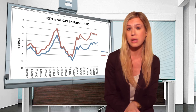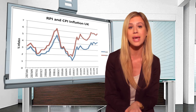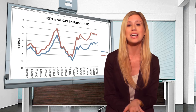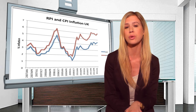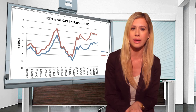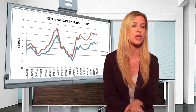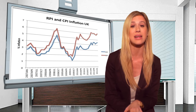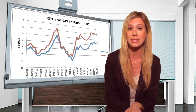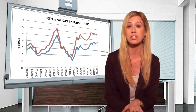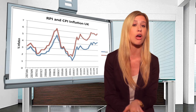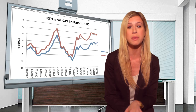However, after late 2003, the UK government has used the Consumer Price Index, also known as CPI, instead of the RPI to set inflation targets. A difference of 0.9 percentage points between the RPI and CPI in the UK is a result of several causes.